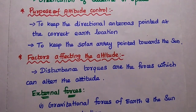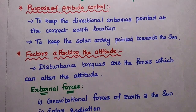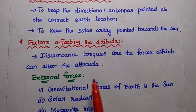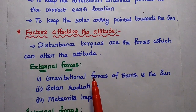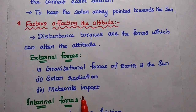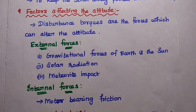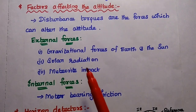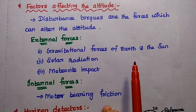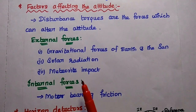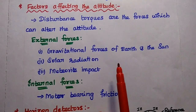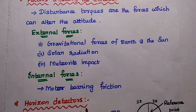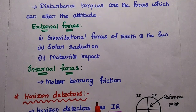The attitude of the satellite may be altered or changed by disturbance forces. These disturbance forces can alter the satellite's attitude — that is, its orientation. There are external forces and internal forces. External forces include gravitational forces of air and the sun, solar radiation, and meteorite impact. Motor bearing friction is an example of an internal force that can alter the attitude.